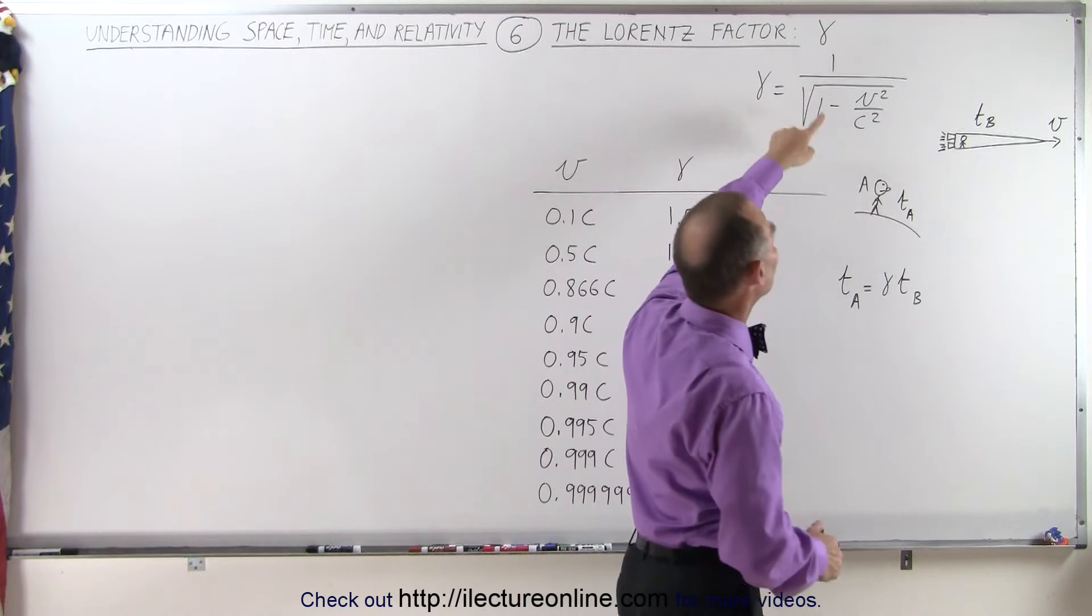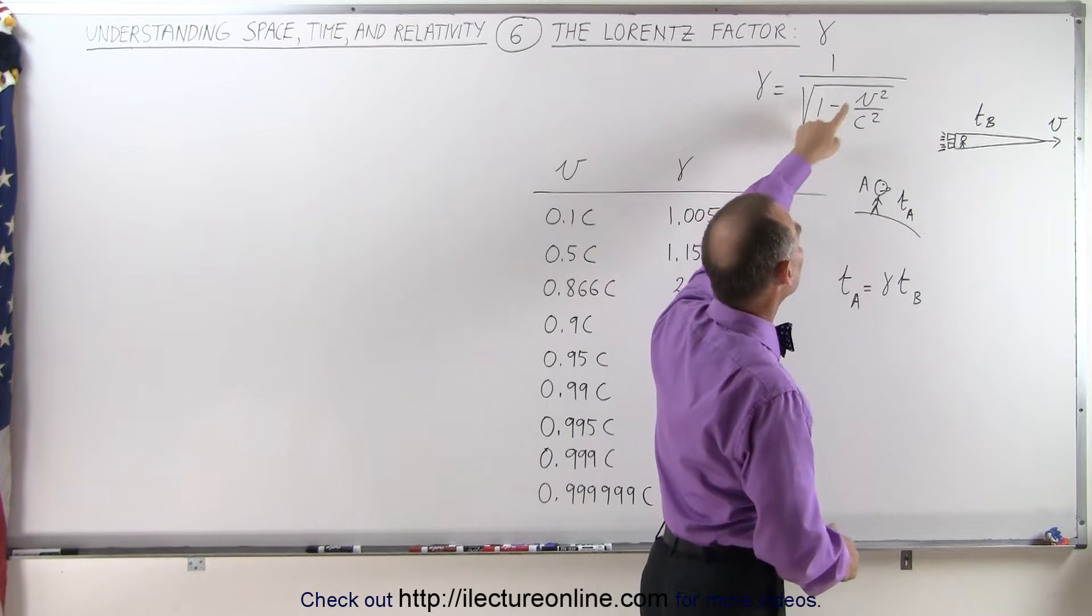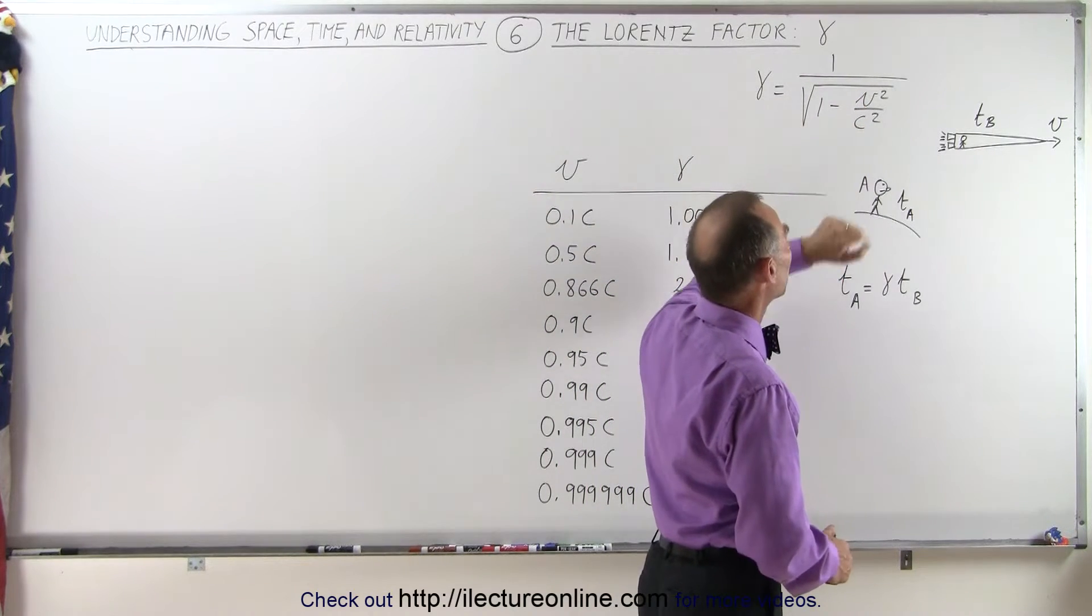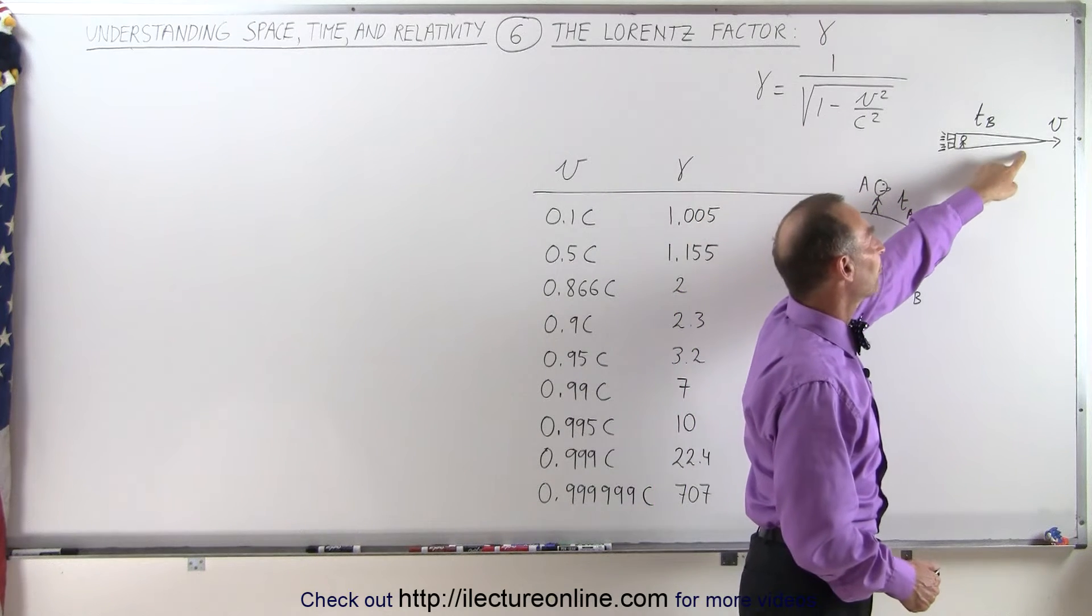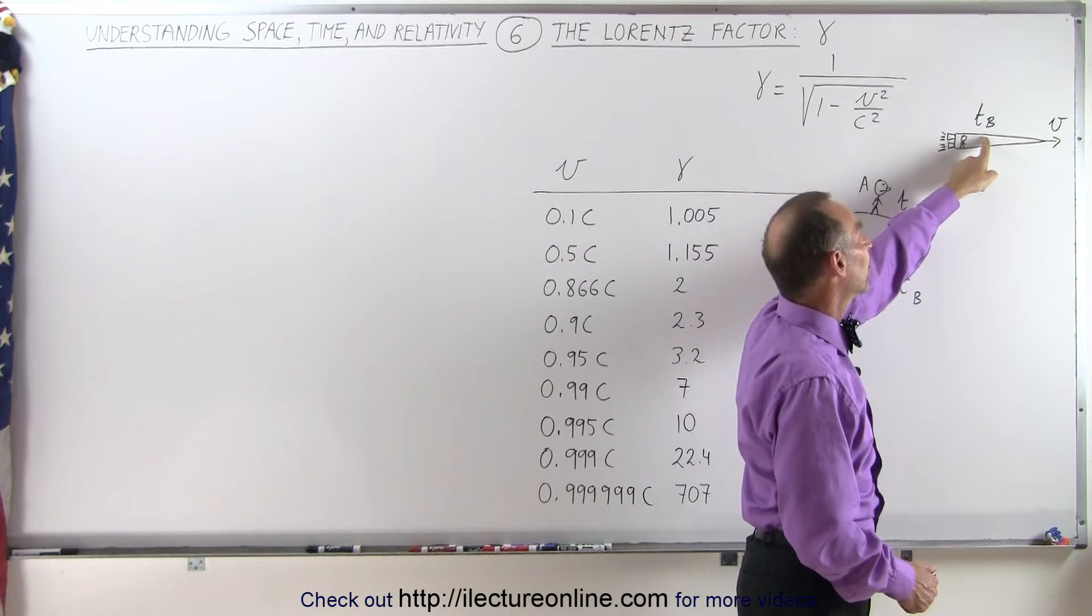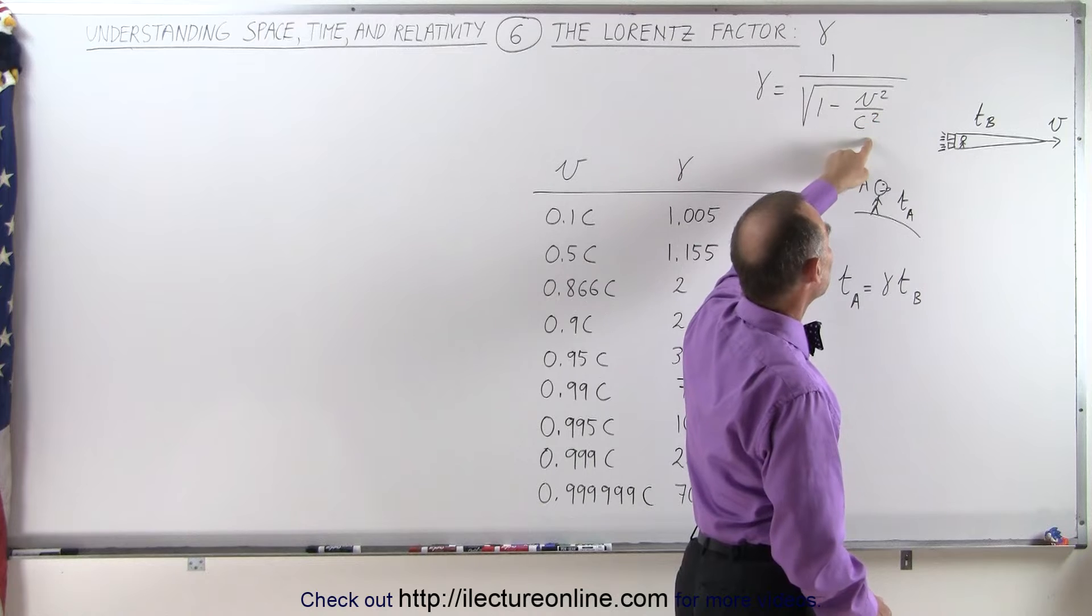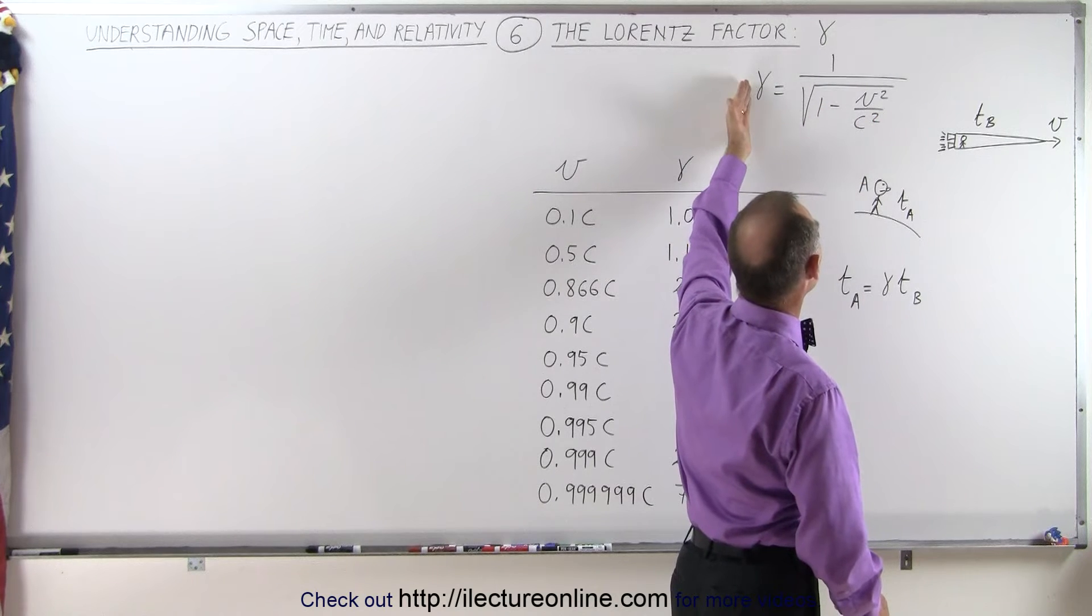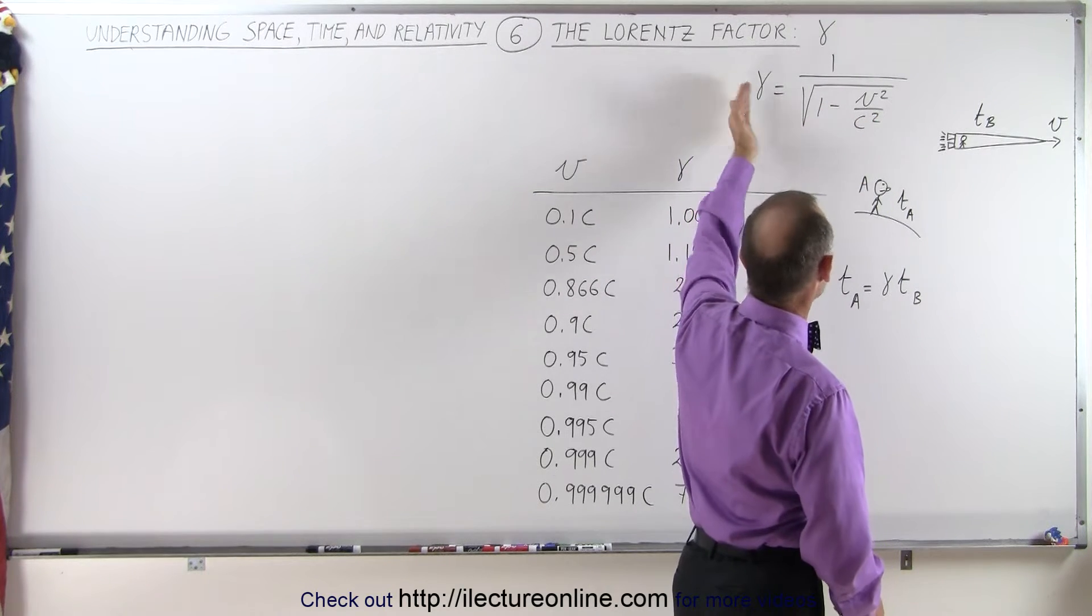The factor is equal to 1 divided by the square root of 1 minus v squared over c squared. Whatever the velocity is of the event where we're measuring things, we put that velocity in here, which gives us a certain value for this factor called the Lorentz factor.